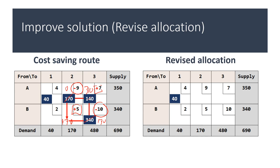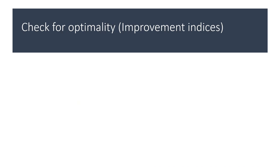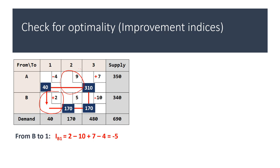The revised allocation is given by this new tableau. If you evaluate the total cost of this revised allocation, you find that the total cost is 4880. Next we want to check if this new allocation is optimal. To check for optimality we must find the improvement indices of the new empty cells. The improvement index associated with B1 is plus 2 minus 10 plus 7 minus 4, which gives minus 5.